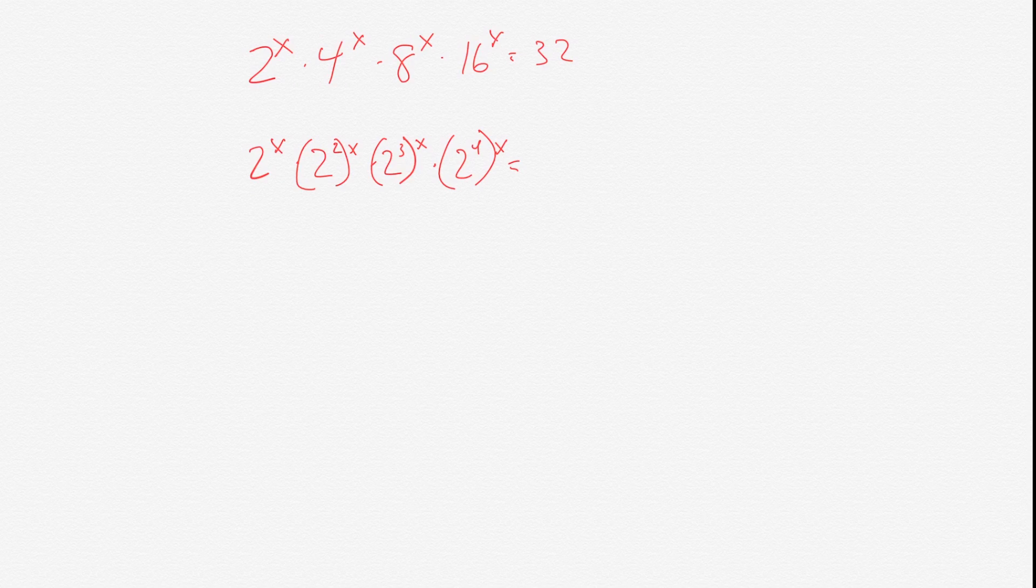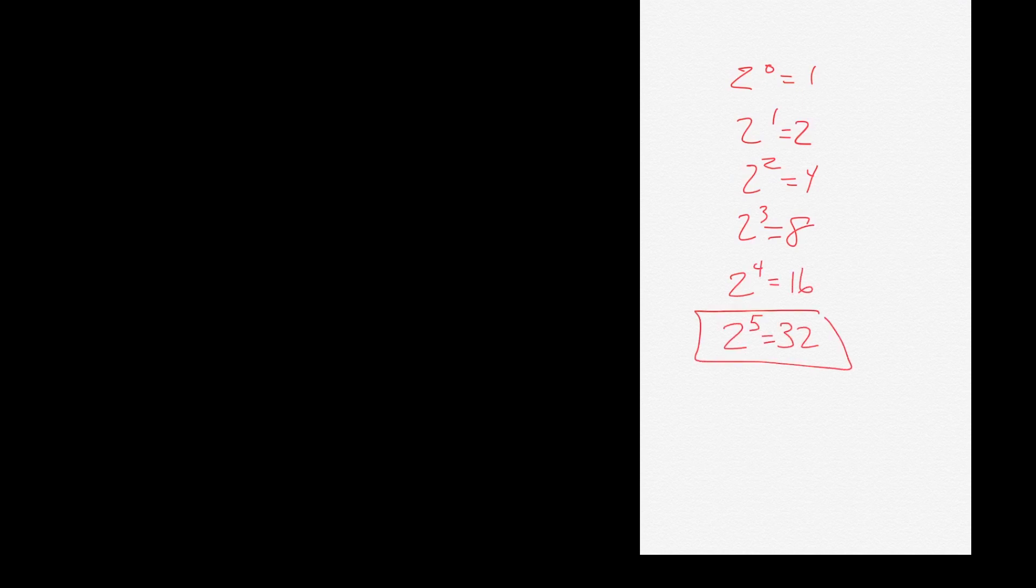To calculate that, we'll do it the long way. 2 to the 0 equals 1. 2 to the 1 equals 2. 2 squared equals 4. 2 cubed equals 8. 2 to the 4th equals 16. And then 2 to the 5th would equal 32. All right, so all of this equals 2 to the 5th.